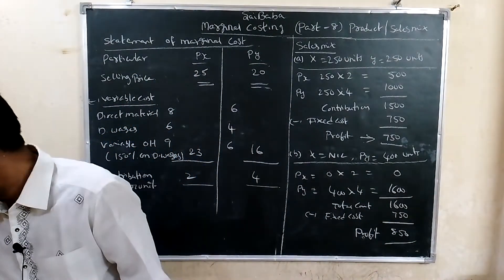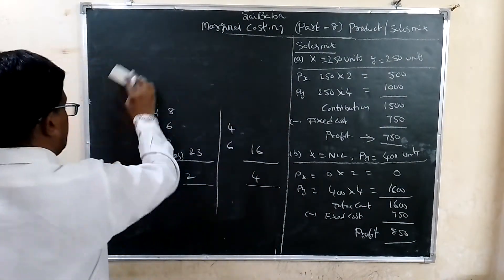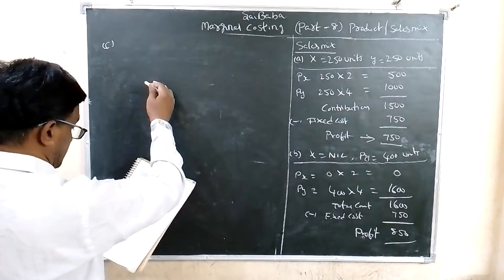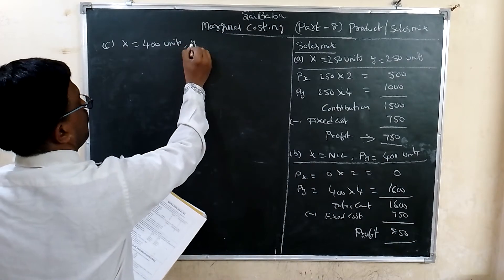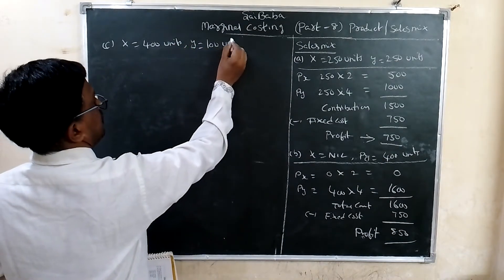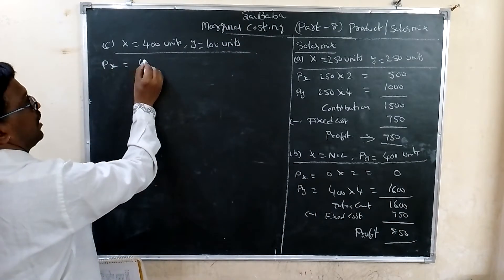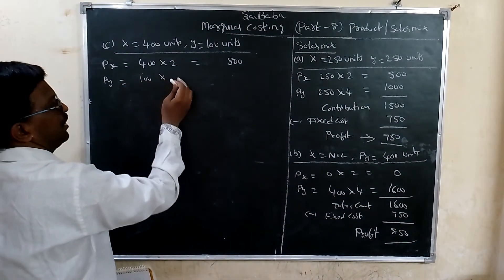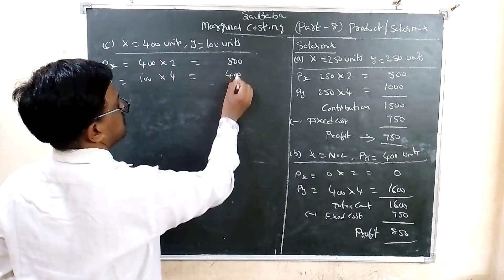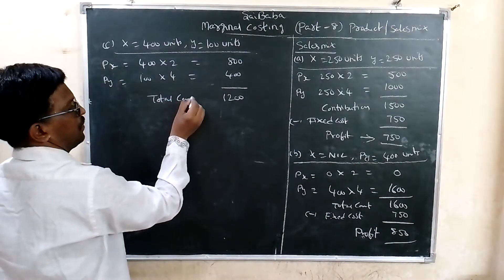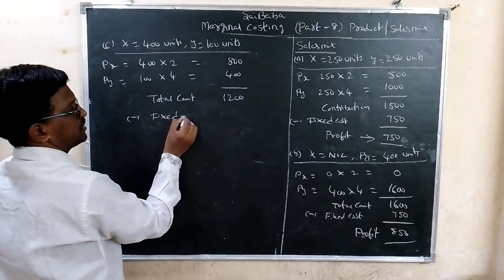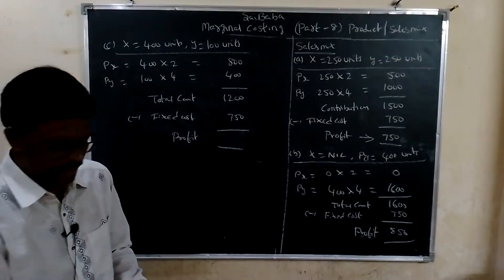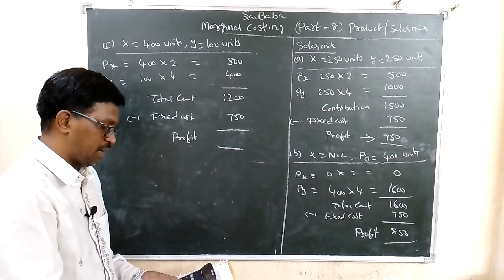Sales Mix C: X = 400 units, Y = 100 units. Contribution from X: 400 × 2 = 800 rupees. Contribution from Y: 100 × 4 = 400 rupees. Total contribution = 1200 rupees. Less fixed cost = 750 rupees. Profit under Mix C = 1200 − 750 = 450 rupees.